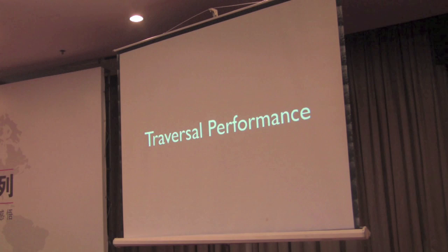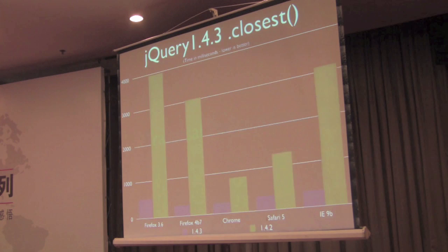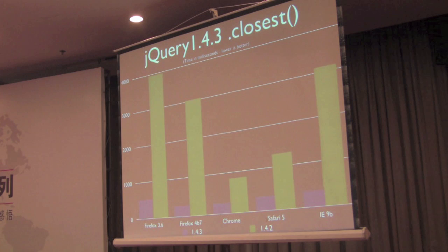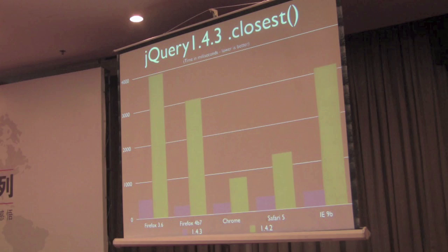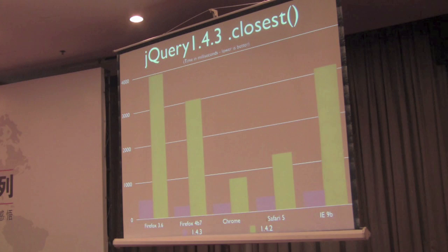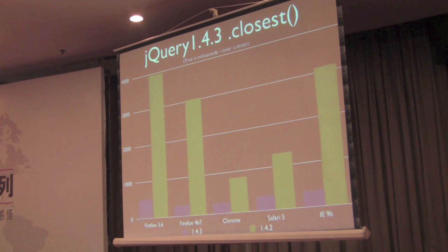Another thing we did a lot of work on was making sure that when you're searching for elements in a page, it's always going to be as fast as possible. In 1.4.3, we ended up getting a lot faster. One of the things that we did here is we used a new method provided by browsers called MatchesSelector. It allows us to give it a CSS selector and determine if a single element matches that CSS selector. This is something that we use in a lot of places in jQuery — we use it for closest, we use it for filter, and a lot of different methods.